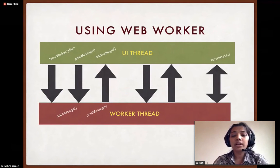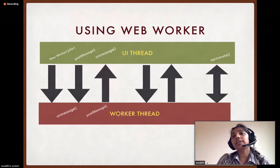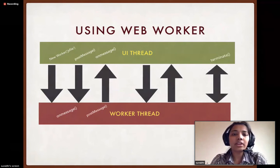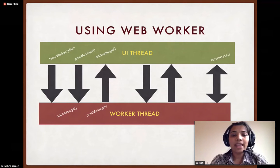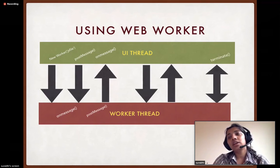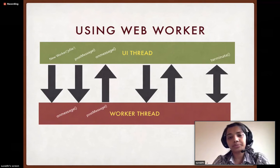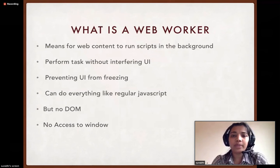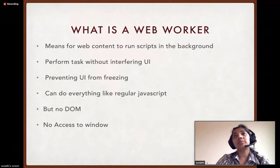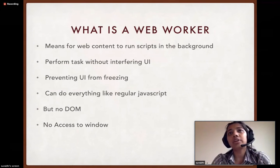With web workers, your main thread creates a worker thread and gives all JavaScript execution tasks to that worker thread, while it takes care of only the UI. This diagram shows how a worker thread is created using the worker constructor, and the arrows show how the main thread and worker thread communicate using messages. Finally, the worker thread can be terminated from the main thread or from the worker thread itself.